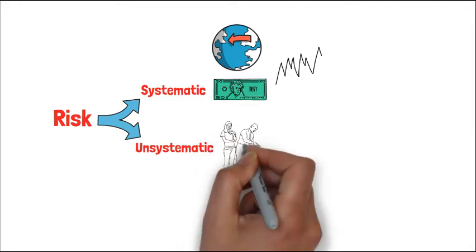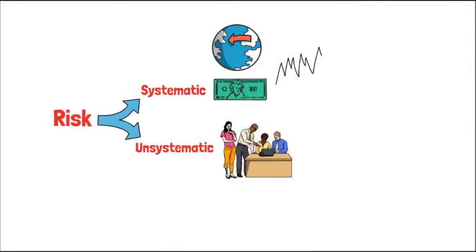Unsystematic risk, however, is owed to factors unique to a company or an industry. Management and labor relations, increased competition, entry of new players, and customers' preference for a company's products are some of the factors that generate unsystematic risk.